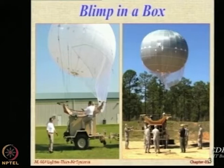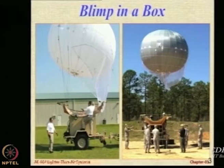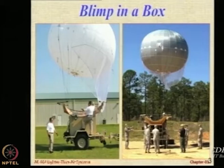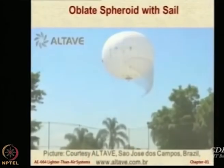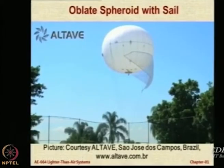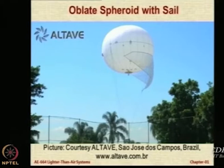To increase the portability of aerostats, simplicity in design, and suitability for remote applications, people have come up with highly portable designs. One is called 'blimp in a box' — a trade name used for both defense and civilian applications. A similar application is also being used by a startup company founded by two M-Tech aero students from a university in Brazil called ITA (Instituto Tecnológico de Aeronáutica). These graduates started a small company using a simple oblate spheroid aerostat with a sail.